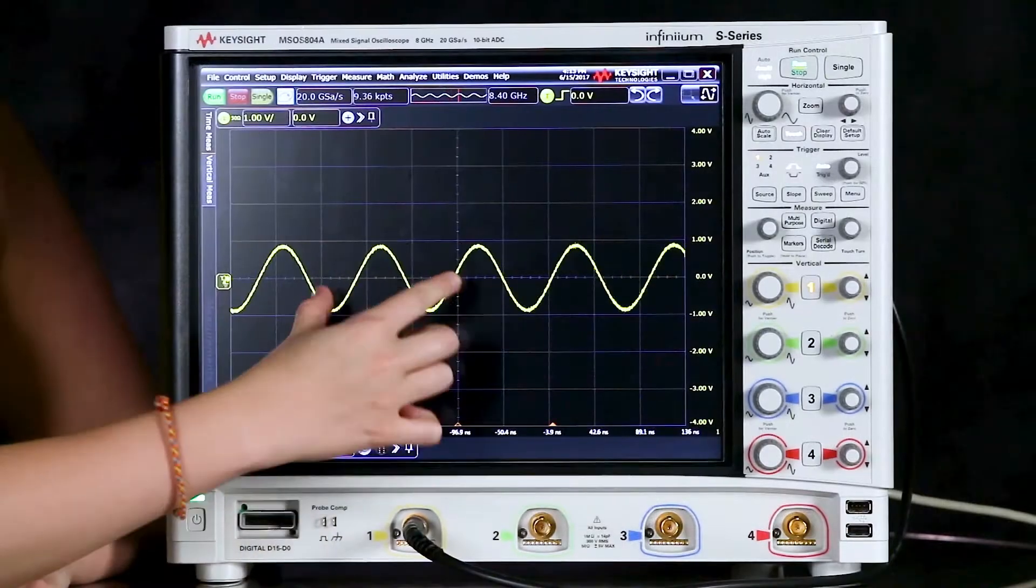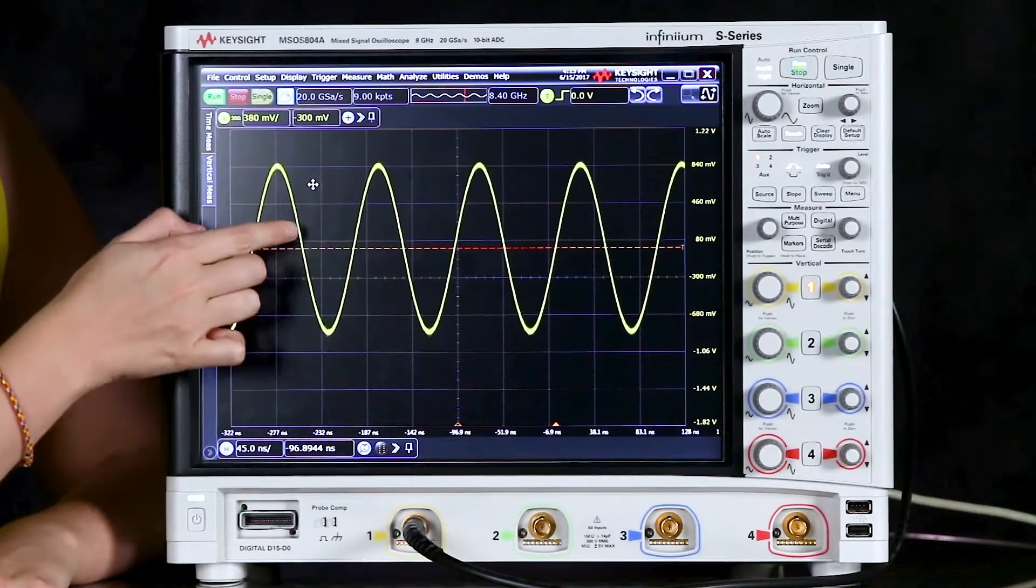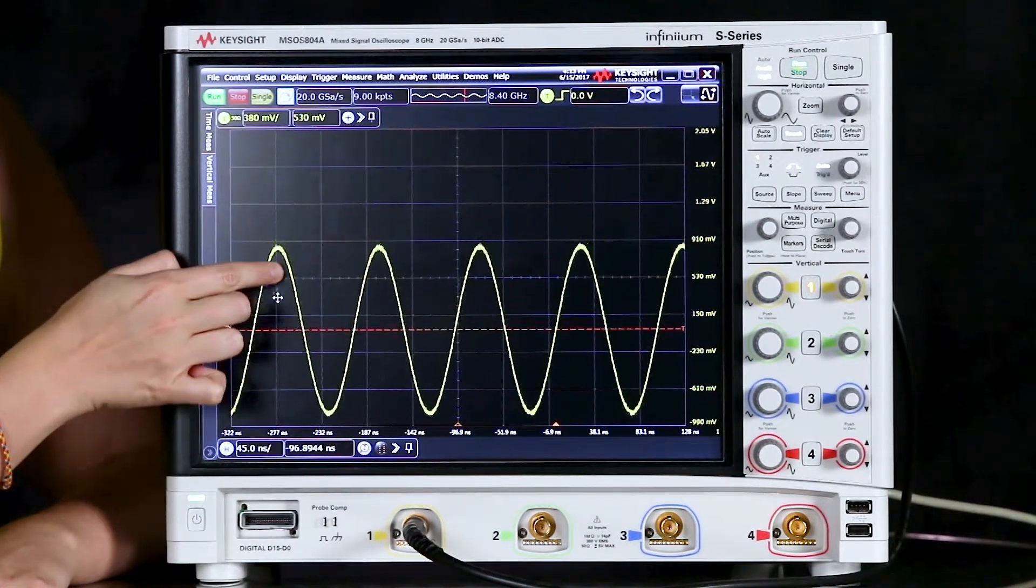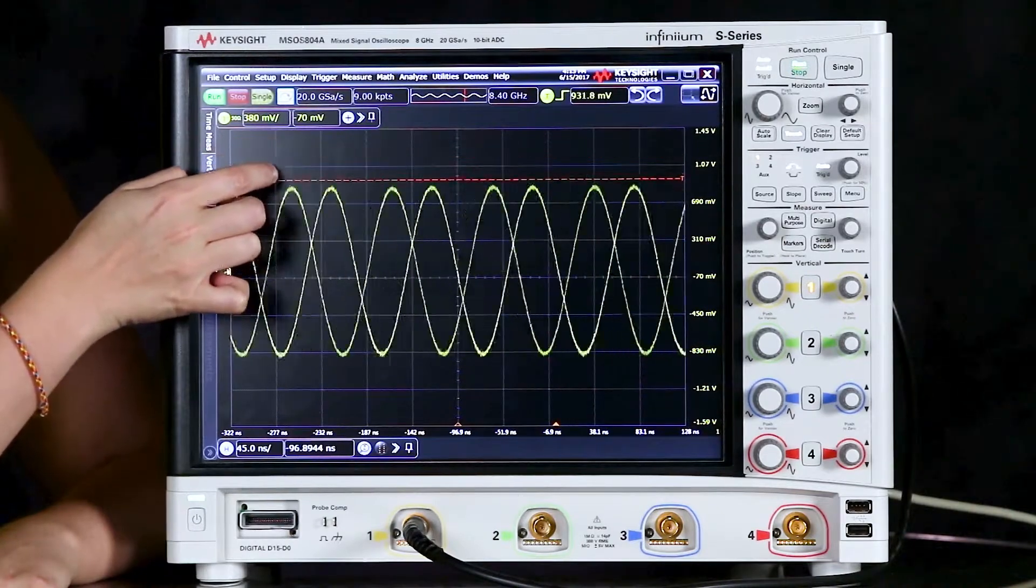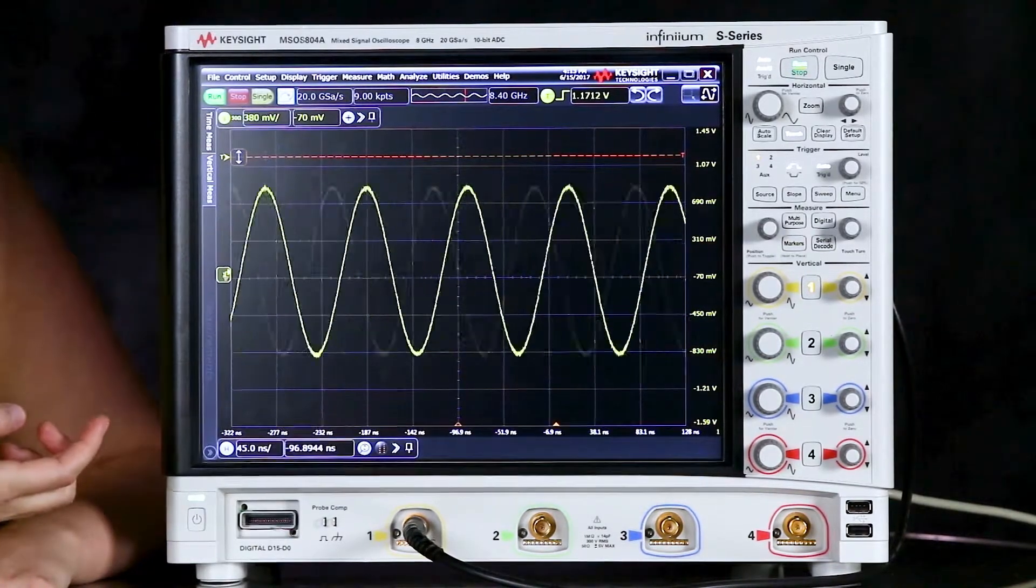Just as Erin showed us in episode 1, we can pinch and zoom to change the scale of the waveform on screen. We can also move it up and down and we can change our trigger level. If we want to have the scope set it up for us...